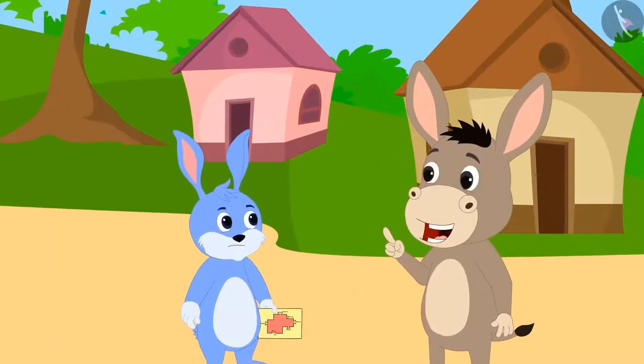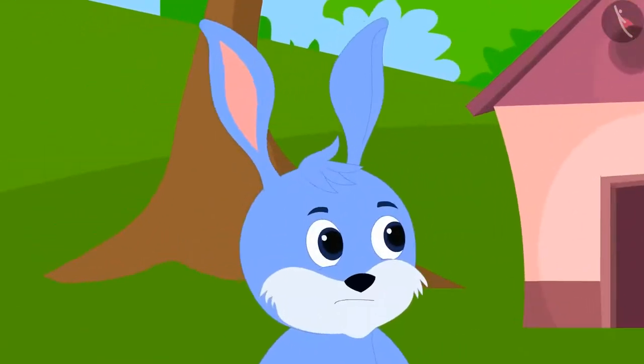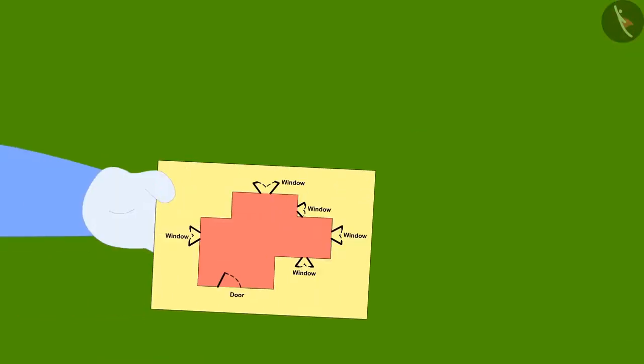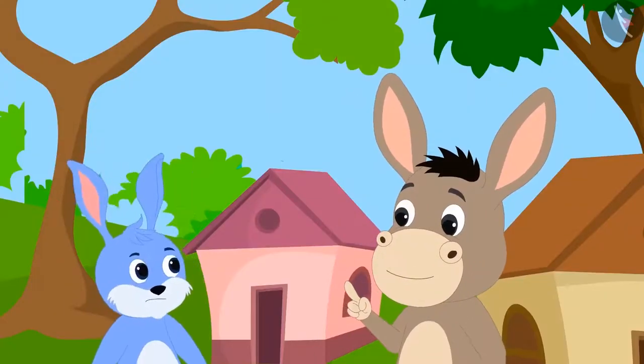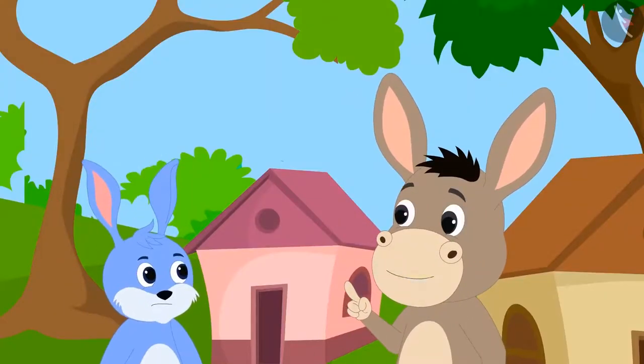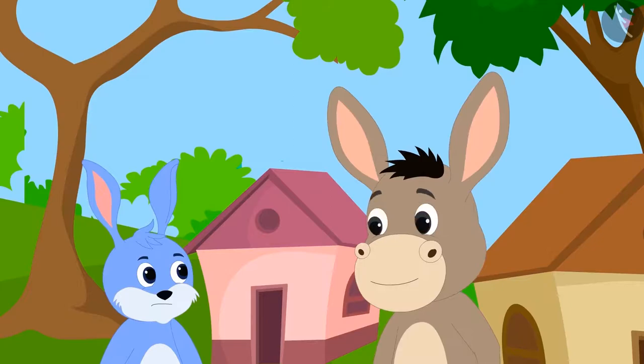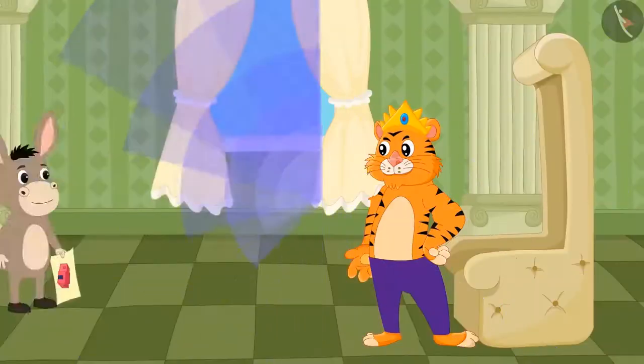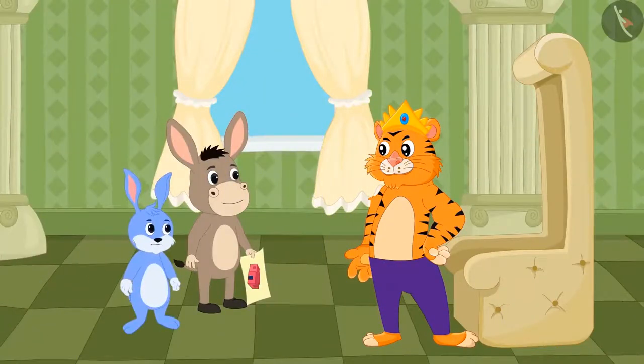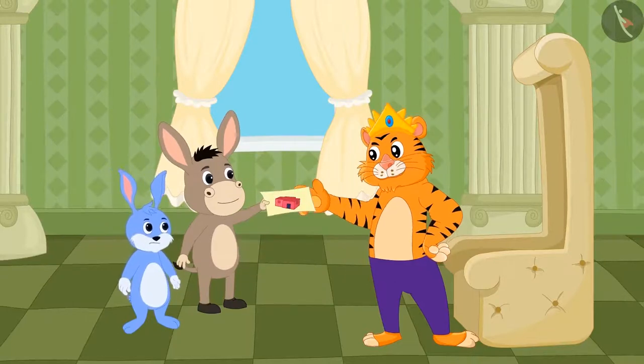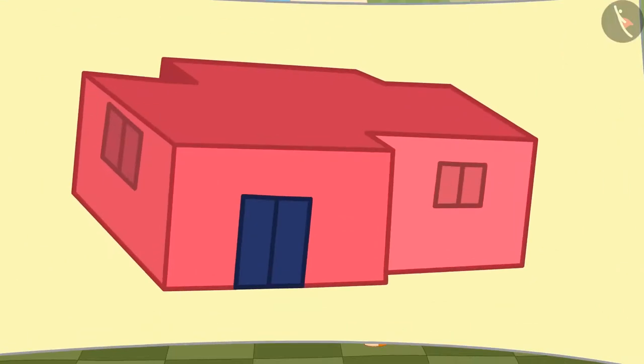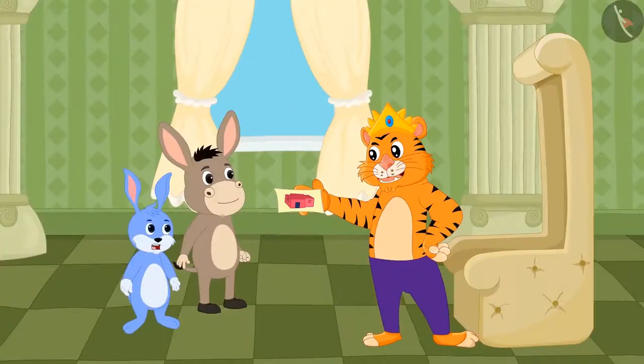Bholla told Banni that he could help him. Banni was shocked. Bholla asked Banni to show the map of the floor and asked him to come with him to the king's court the next day. The next day Bholla and Banni reached the king's court. Bholla showed the king such a picture of his room design. Banni and the king were shocked to see the picture.